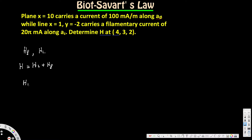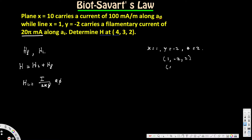Let's start with H_L, the magnetic field intensity due to the infinite line. It's calculated using the formula H_L = I/(2πρ) * a_φ. We know the current for the line is 25 milliampere. We need to calculate ρ and a_φ. ρ is the distance from the wire at (1, -2) to the point of interest at (4, 3, 2), found by subtracting the coordinates.